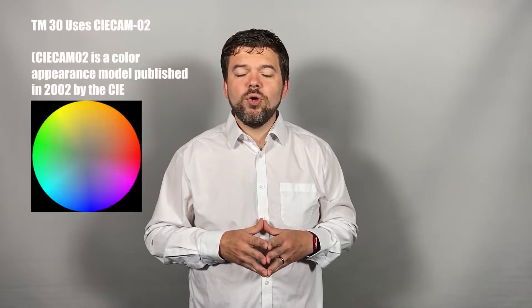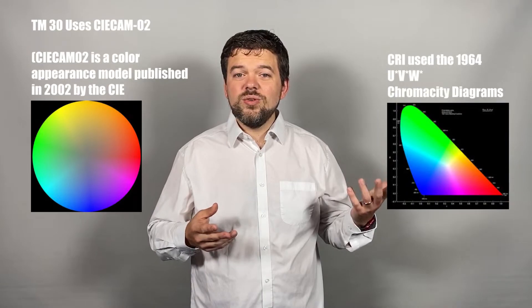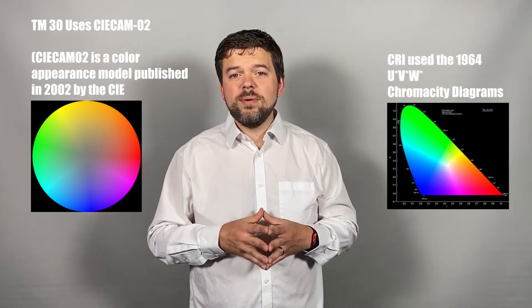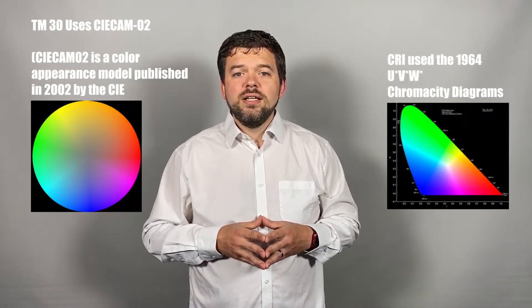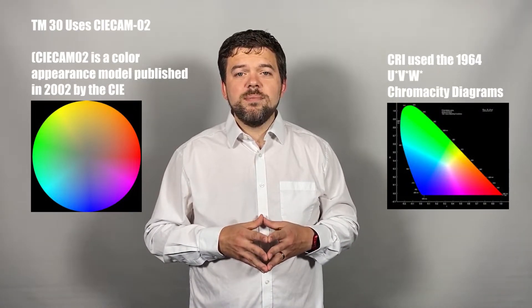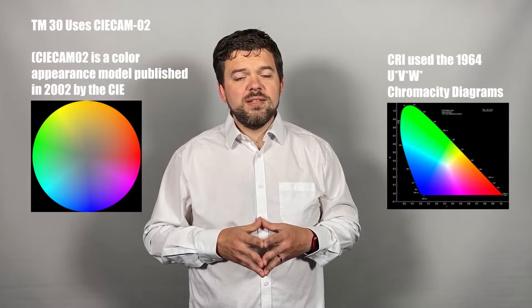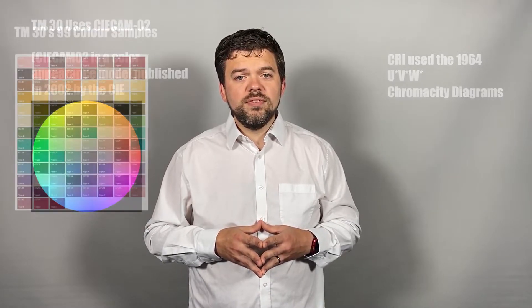TM30 was based on the modern colour space CAM02 from the start, whereas CRI used a quite dated chromaticity diagram. CAM UCS is a much more capable system, giving much more information.